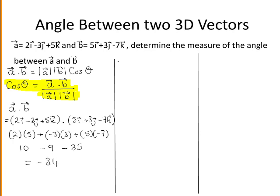So that is the dot product of vector a with vector b. Now we will find the modulus of vector a. Vector a is equal to 2i minus 3j plus 5k. So the modulus of vector a is equal to the square root of the i coefficient squared — which is 2 squared — plus the j coefficient squared — which is minus 3 squared — plus the k coefficient squared. It's very similar to finding the modulus of a two-dimensional vector.